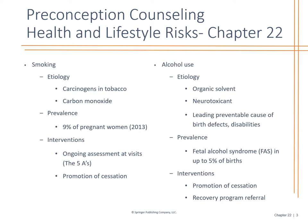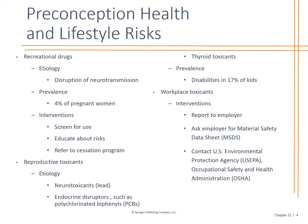Alcohol use and fetal alcohol syndrome affects about 5% of births with low birth weight. Offer recovery programs and promote cessation. Talk about different strategies to help. Recreational drugs are more prevalent than you'd think — we screen for those with urine tox screens and blood tests. There are lots of different risk factors to the fetus with recreational drugs. Thyroid toxicants, neurotoxicants like lead lead to disabilities, and we go back into that disparity of self-perception in kids born with these syndromes based on the antepartum and intrapartum period.